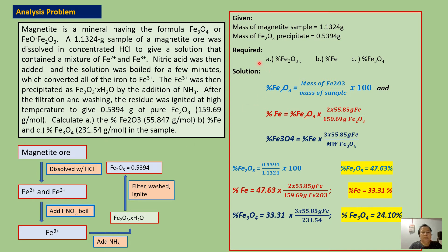Now let us solve the problem, but before solving, let us identify first all given information and what is asked in the problem. In this problem, we are given the mass of magnetite sample, which is 1.1324 grams, and the mass of Fe2O3 precipitate equals 0.5394 grams. We are asked to solve for percent Fe2O3, percent iron, and percent magnetite.